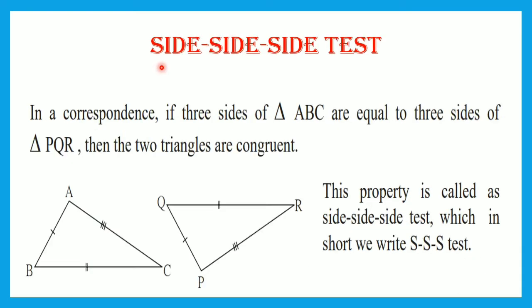There are some tests of congruency of two triangles. One is the Side-Side-Side test. In a correspondence, if three sides of triangle ABC are equal to three sides of triangle PQR, then the two triangles are said to be congruent. This property is called the Side-Side-Side test, which in short we write as the SSS test.